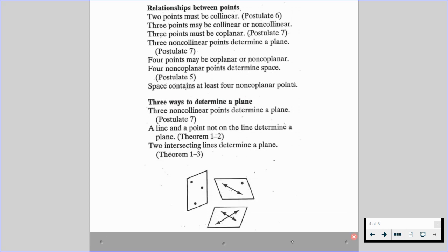Here is a quick little diagram to assist with how we name or determine planes. Three non-collinear points, a line and a point not on the line, and two intersecting lines.